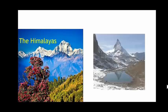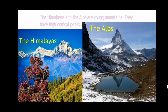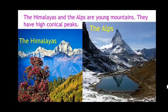Coming to different types of mountains — as I told you, mountains appear different as per their age. The first type is the young mountains, such as the Himalayas and the Alps. They are known as young mountains because they have conical peaks and they are very high.